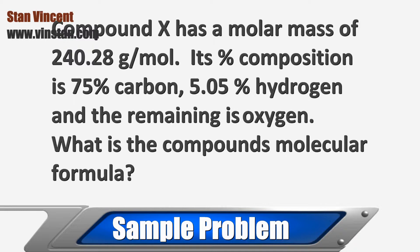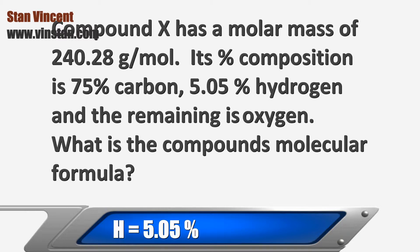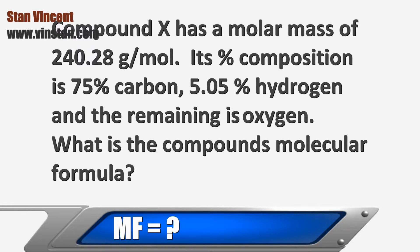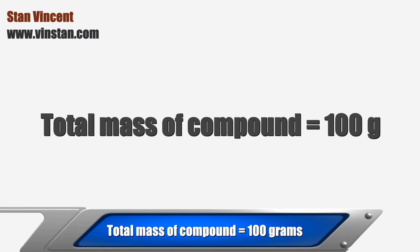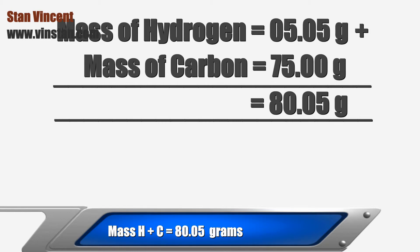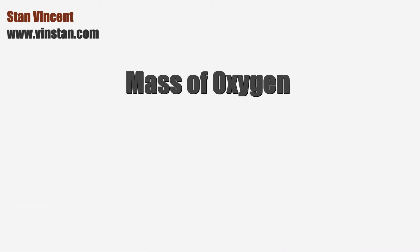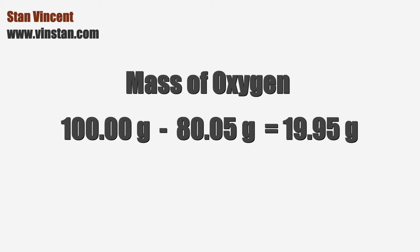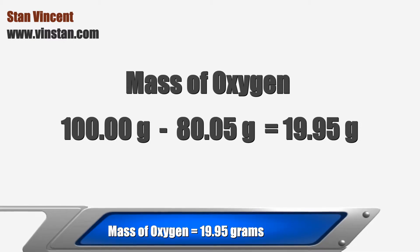Compound X has a molar mass of 240.28 grams per mole. Its percent composition is 75% carbon, 5.05% hydrogen, and the remaining is oxygen. What is the compound's molecular formula? The first assumption we will make is we have 100 grams of the compound. The mass of hydrogen plus the mass of carbon is equal to 80.05 grams. Since we start with 100 grams of the compound, 100 minus 80.05 grams will give the mass of oxygen, which is 19.95 grams.